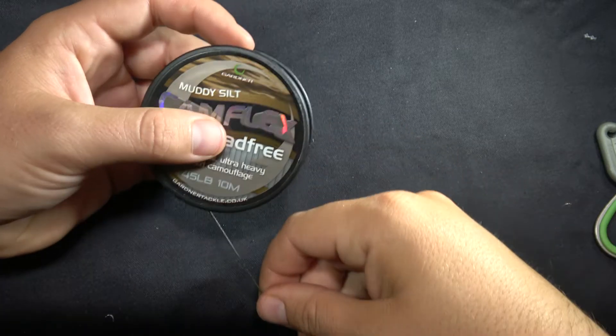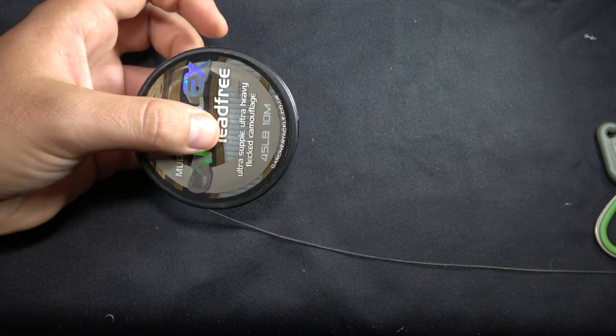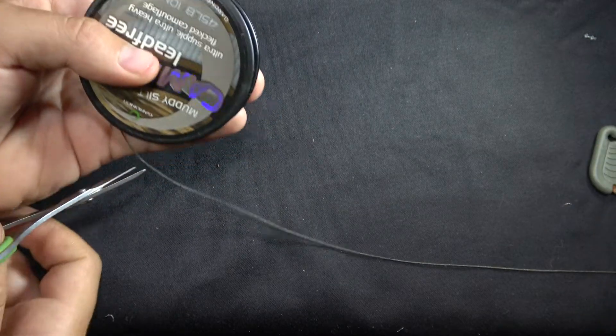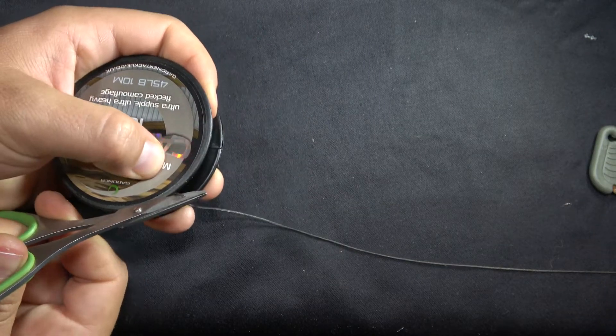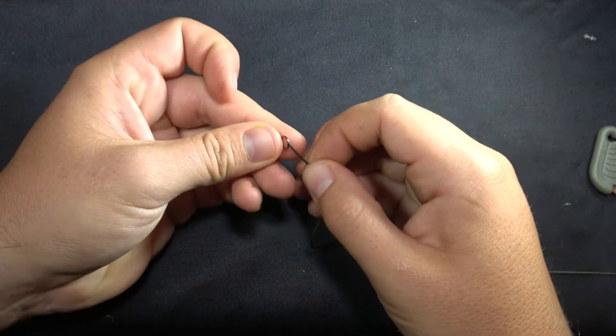Grab your Camflex 45 pound lead free. Pull off between a meter and a meter and a half. Depends on what you prefer. Get your ring and tie your lead free to it with a four turn grinner knot.